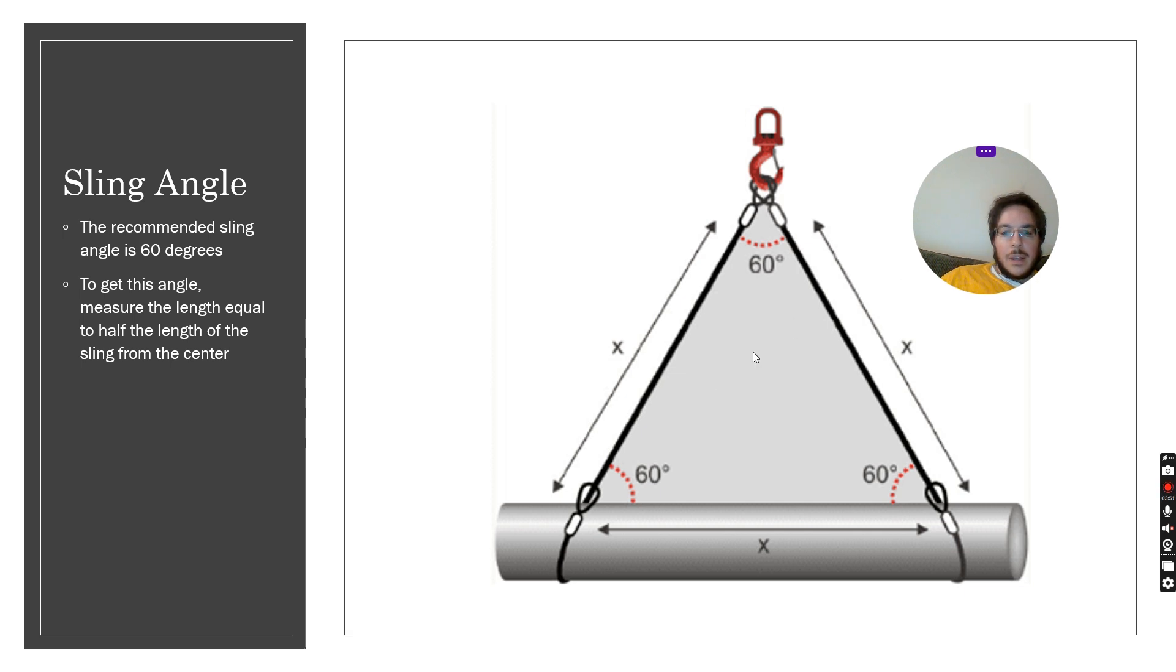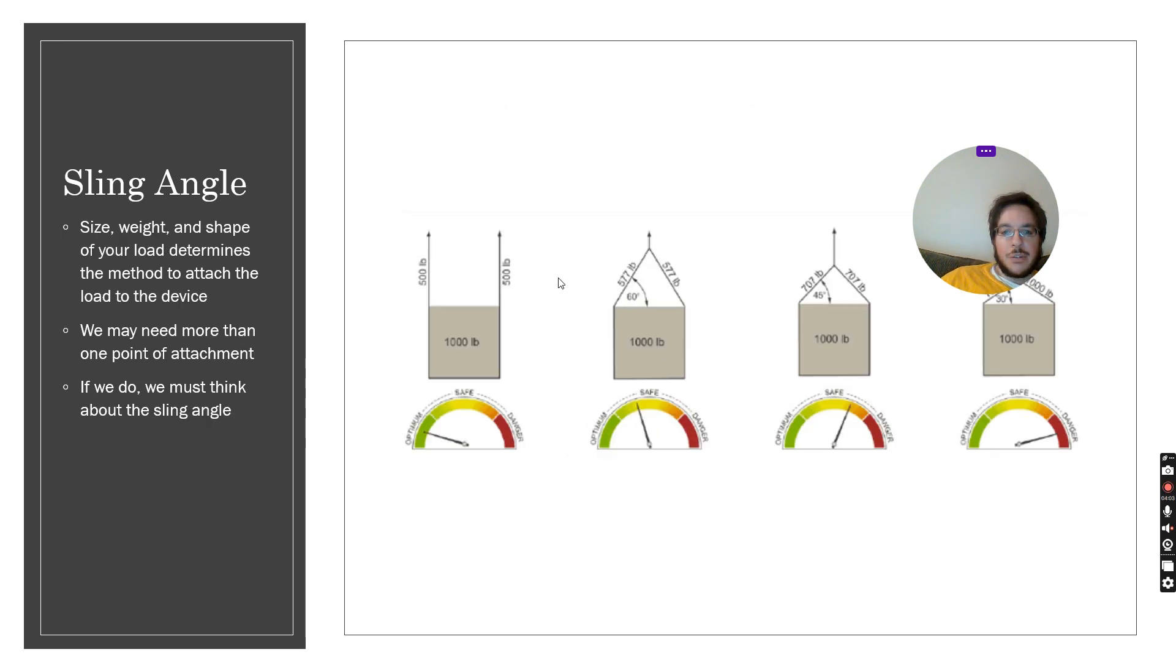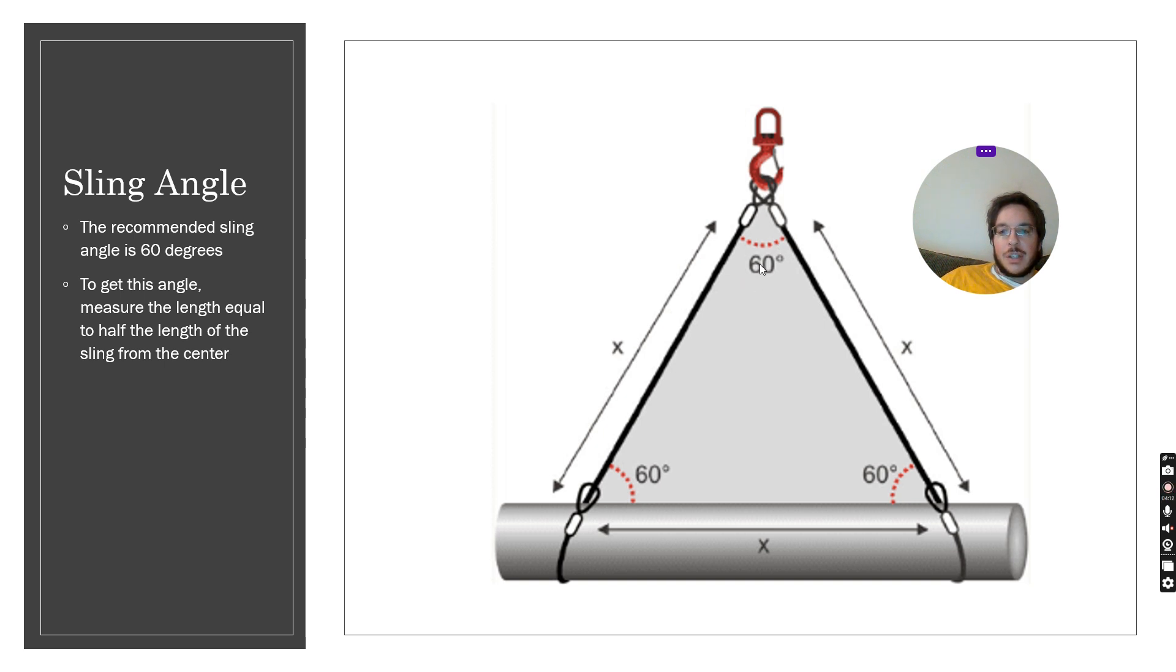The recommended sling angle is 60 degrees. That gives us optimal force, pretty close to 500 pounds in this case. To get 60 degrees this is an equilateral triangle which means each side has an equal distance and that gives us an equal angle. The distance between our two attachment points on our load must be equal to the length of the rope.